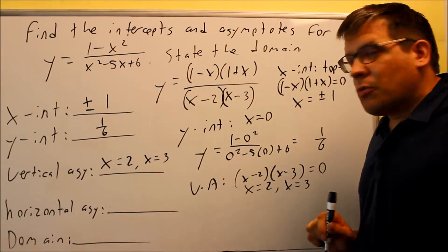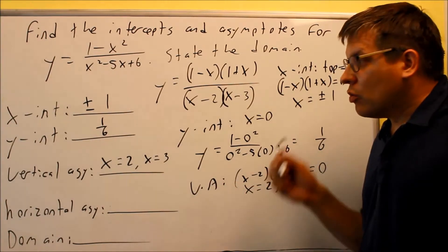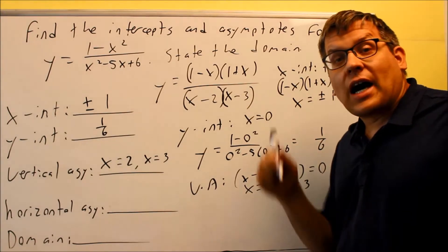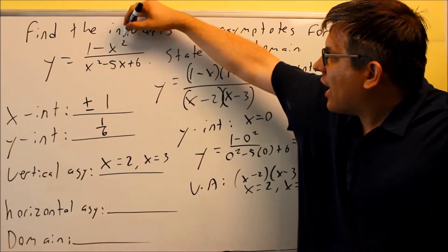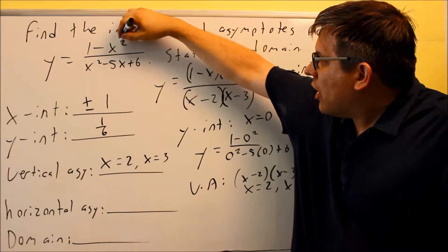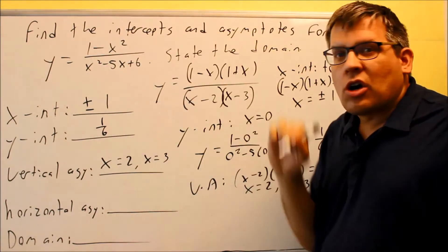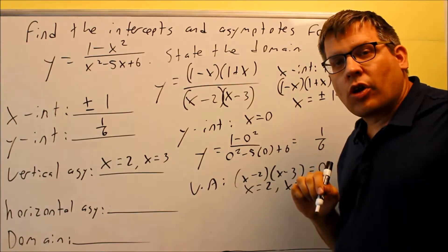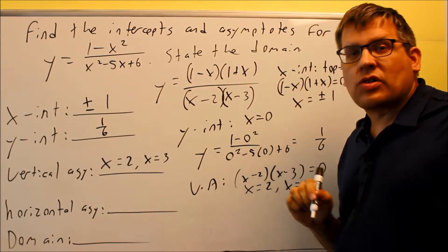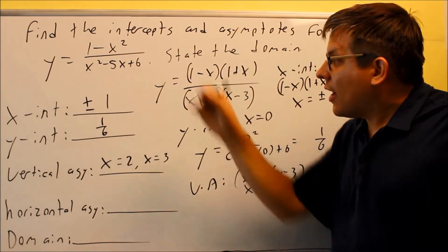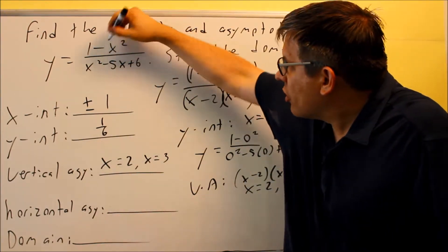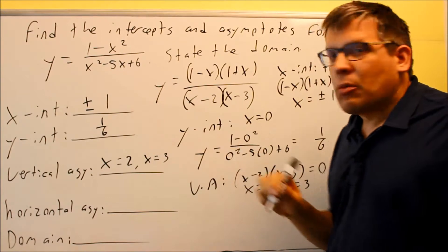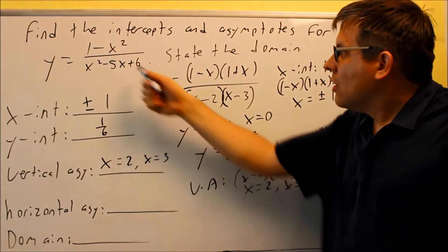For the horizontal asymptote, this one is using the rules. So the rules that we talked about in the notes, you're looking for the highest power on top, the highest power on the bottom. In this case, the highest power on top is a 2. Highest power on the bottom is also a 2. So that means that we're going to use our rule number 2 that says that if your n is equal to m, the highest power on top is the same as the highest power on the bottom. What you do is you're going to divide the numbers that come in front of each of those coefficients.